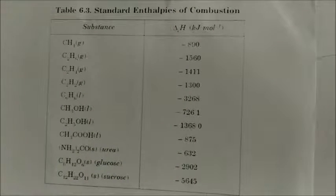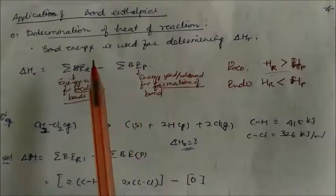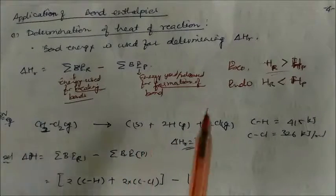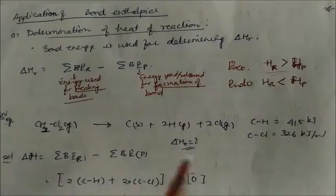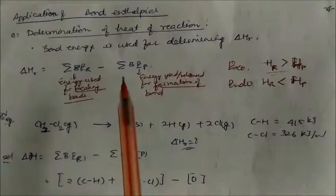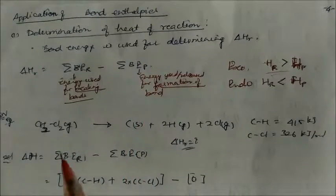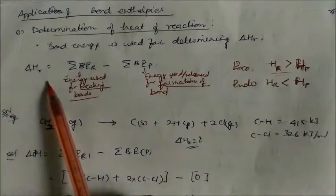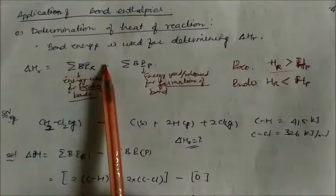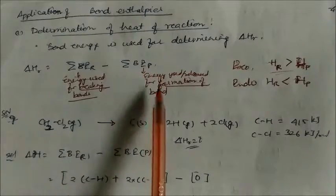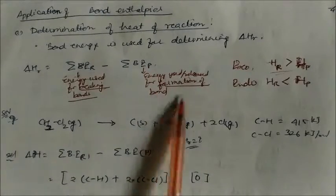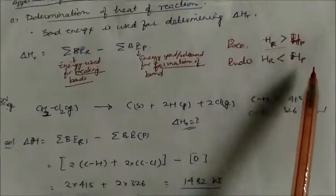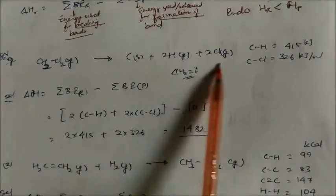Applications of bond enthalpies include determining heat of reaction, heat of formation, heat of combustion, resonance energy, and heat of transition. The formula is: heat of reaction = sum of bond enthalpies of reactants minus sum of bond enthalpies of products. For exothermic reactions, reactant bond energies exceed product bond energies; for endothermic, the reverse. Example: CH₂Cl₂ atomization using known C–H and C–Cl bond energies — product atoms have zero bond energy, so only the reactant side is summed.